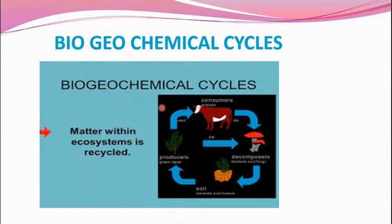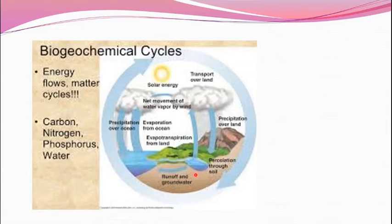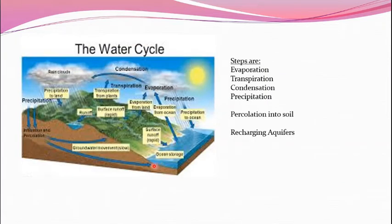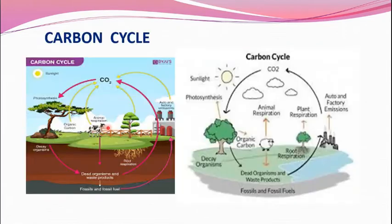The next functional component is biogeochemical cycles. In our syllabus, we cover the water cycle, carbon cycle, nitrogen cycle, phosphorus cycle, and potassium cycle — energy flows, matter cycles. In the water cycle, the basic steps are evaporation and transpiration from plants. The evaporated water gets condensed and precipitated; on land it percolates into the soil and recharges aquifers, and in water bodies it evaporates again in a cyclic manner.